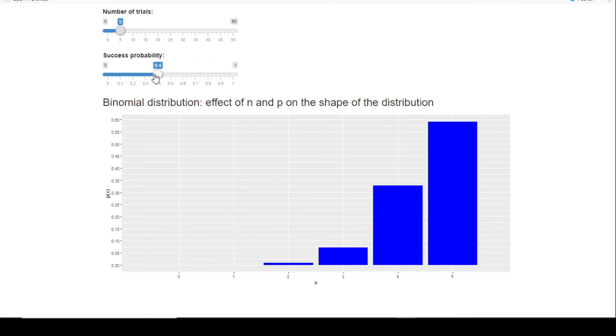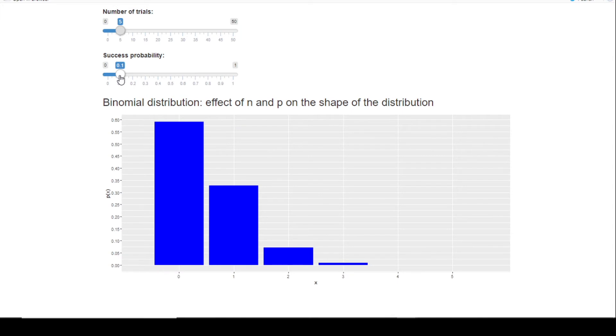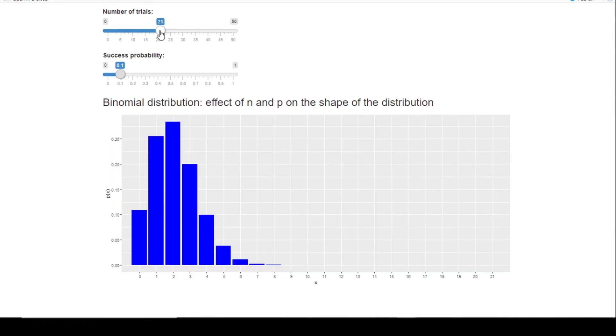I'm going to move my p back to 0.1. Let's look at the effect of n. How will the changing n affect the shape of my distribution? If I increase my n, my distribution seems to be a little bit more symmetrical.